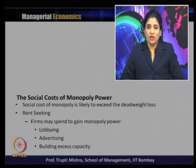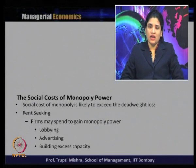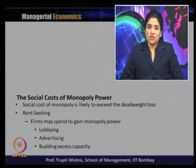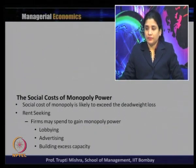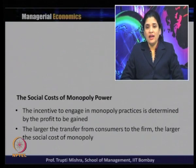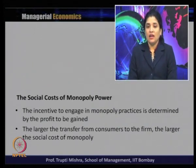The social cost of monopoly is always likely to exceed the deadweight loss. This may occur due to rent-seeking: firms may spend to gain monopoly power — as when additional costs are involved — and that is why the social cost may exceed the deadweight loss. Firms may spend to gain monopoly power through lobbying, advertising, and building excess capacity. The incentive to engage in monopoly practices is determined by the profit to be gained; more profit means more incentive.